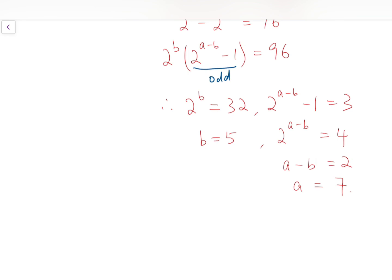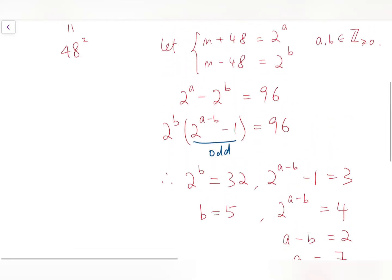Going back to the system above, we have m + 48 to be equal to 2^7, and m - 48 equals 2^5.